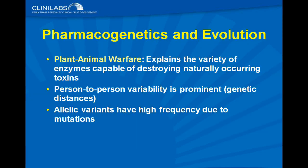Pharmacogenetics and evolution: one concept is plant-animal warfare, which explains the variety of enzymes capable of destroying naturally occurring toxins. Many centuries ago, when people were hunters and gatherers, some toxins in wild fruits and vegetables made individuals sick. But over many generations, individuals developed systems to detoxify those substances so they weren't toxic anymore — that's what we describe as plant-animal warfare.